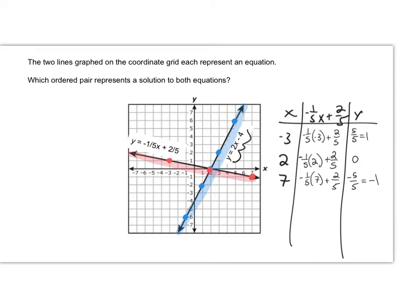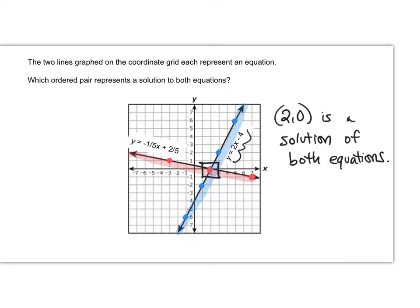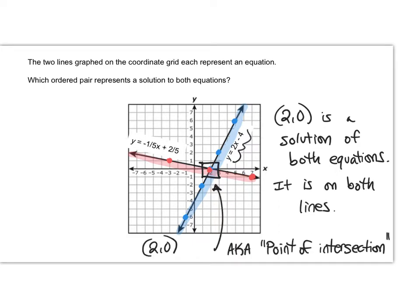Now you may have noticed that one of the points is actually on both of the lines. And that point is right here. That's the point 2, 0. The point 2, 0 is a solution of both of these equations. It's on both of the lines. It is also known as the point of intersection for these two lines. It is the one point where the lines intersect. It is the one point that is on both lines.